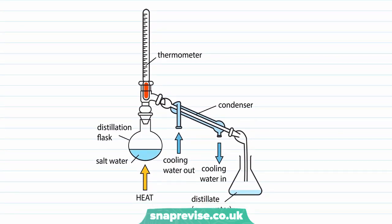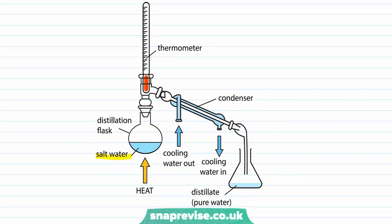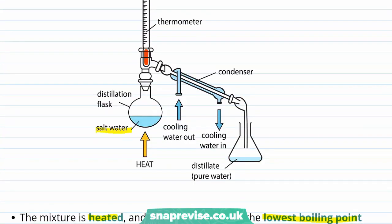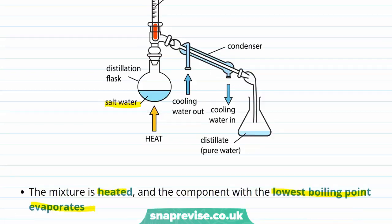The mixture, which in this case is seawater, is placed into a conical flask. This mixture is then heated, and as a result the component of this mixture with the lowest boiling point will evaporate first. This component will form a vapour, which is just another name for the gas phase version of the component. This vapour will rise out of the conical flask and through into an area of the apparatus known as the condenser.